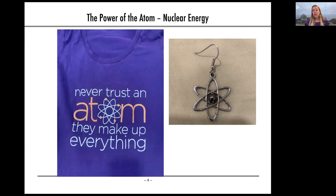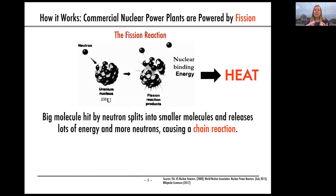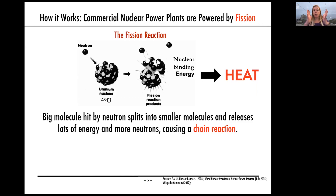Today we're going to talk about how it works — the power of the atom. Nuclear energy uses nuclear binding energy to provide heat in a process called fission. We have a fissile atom — a large atom that when hit with a neutron breaks apart and releases that nuclear binding energy as heat. It also releases neutrons that can hit other fissile atoms and cause a chain reaction.